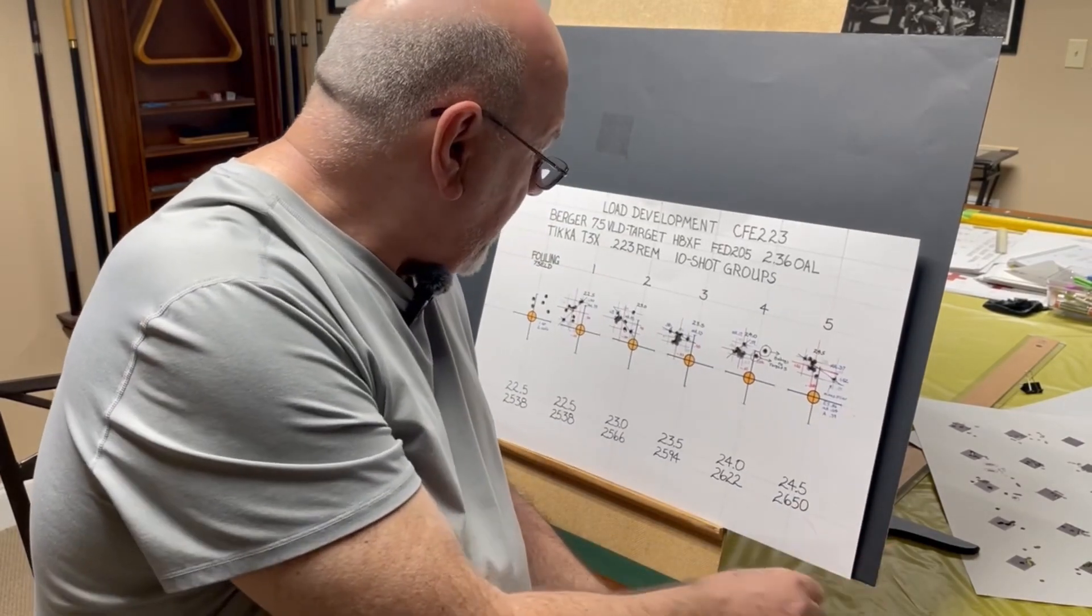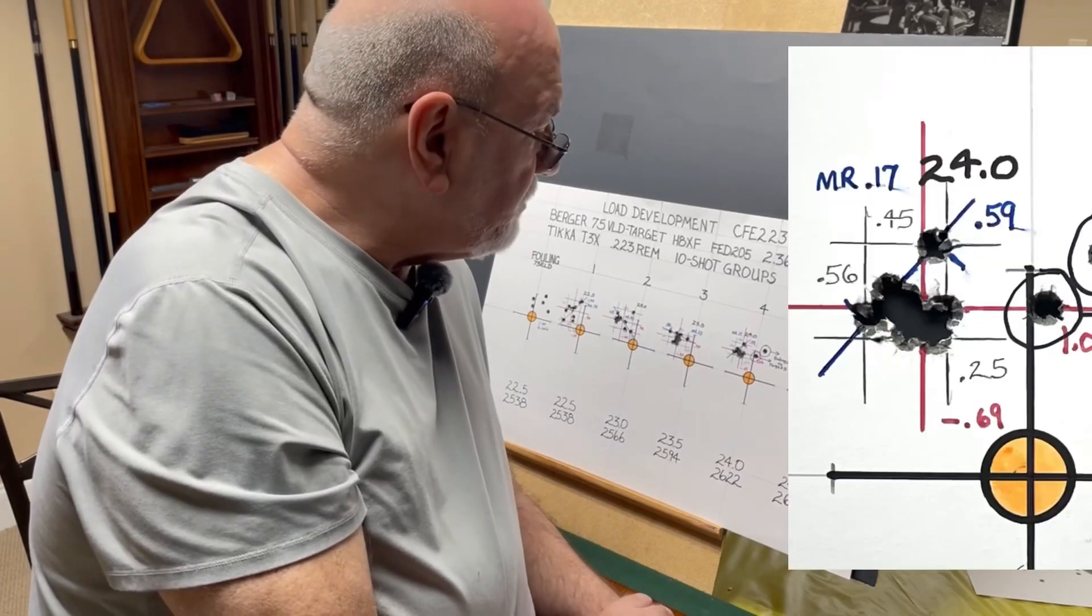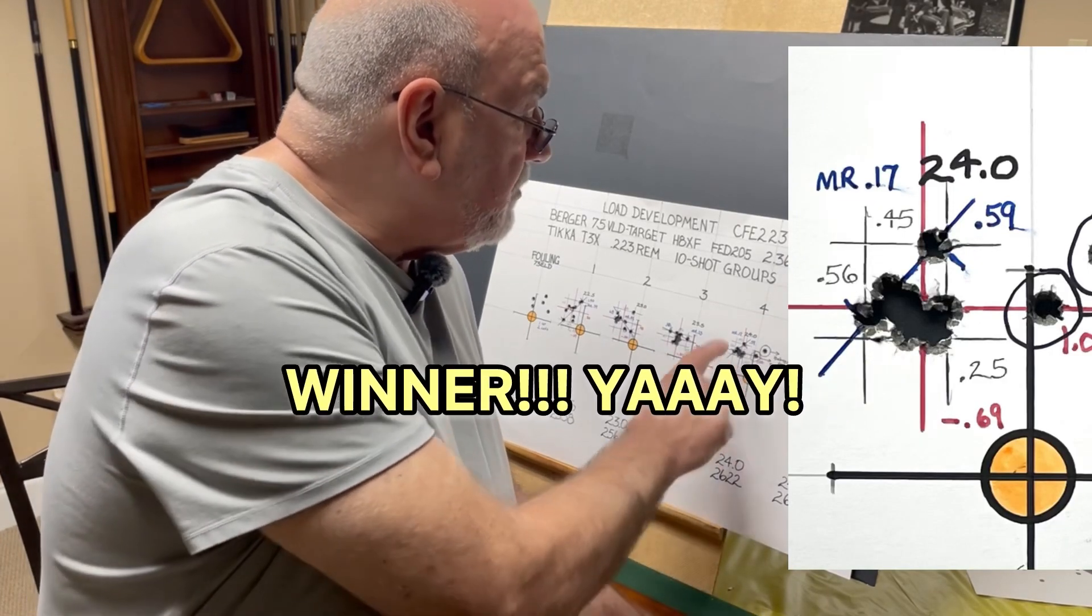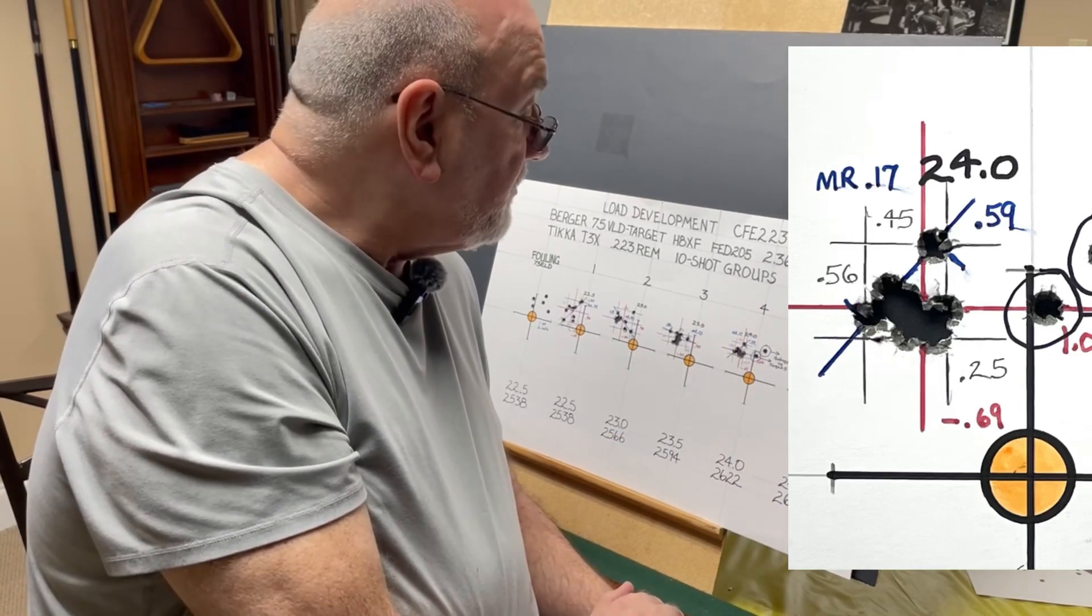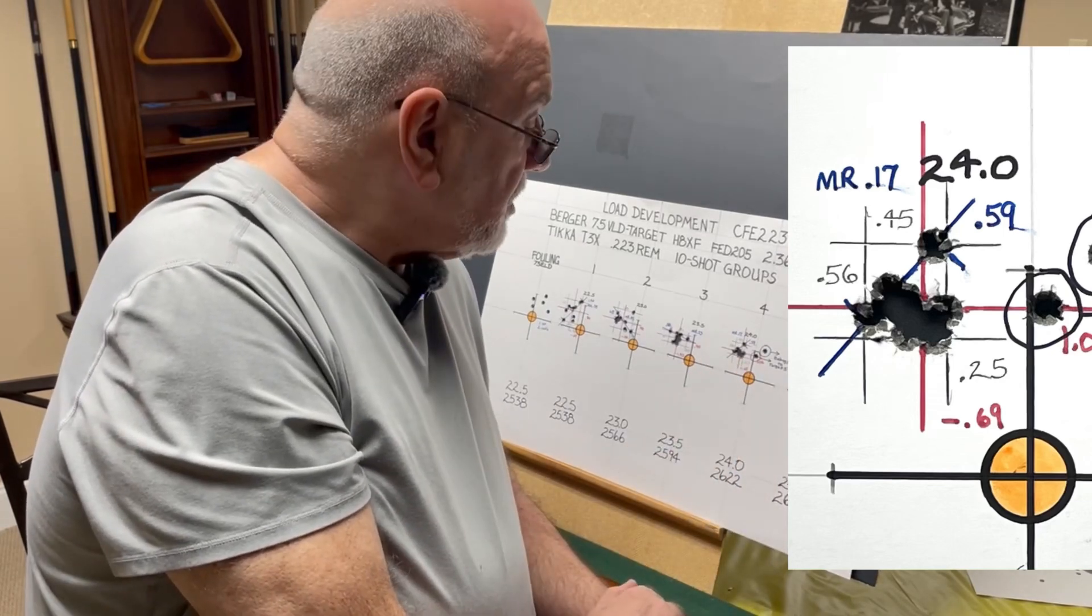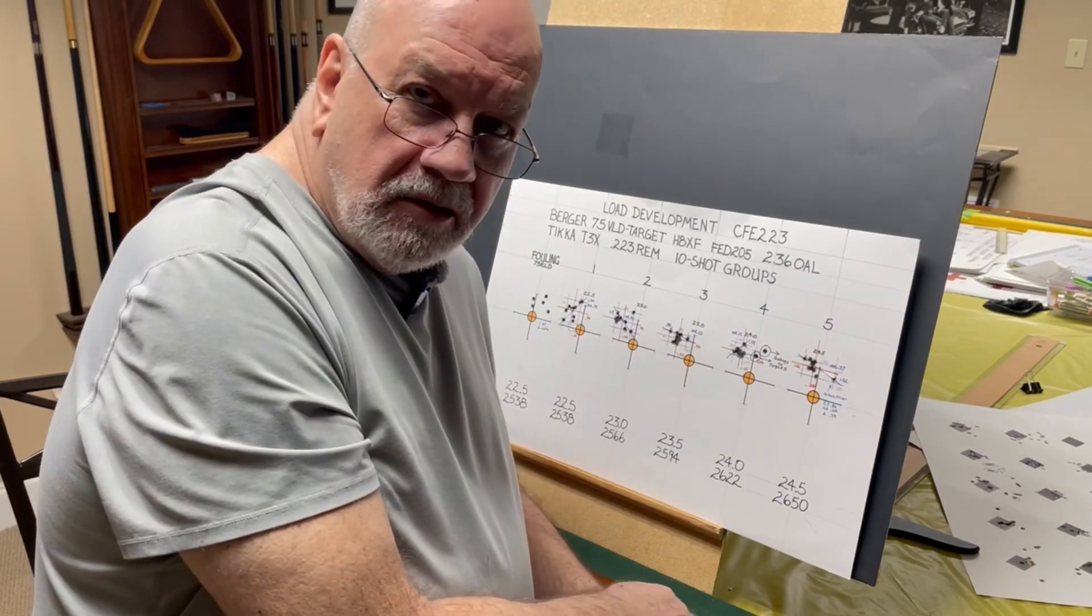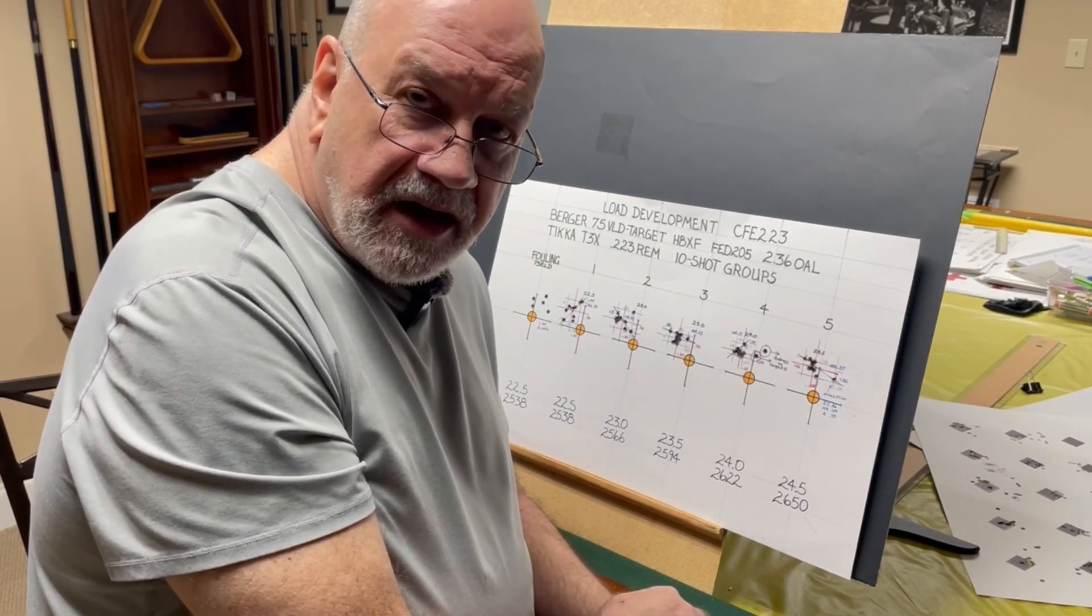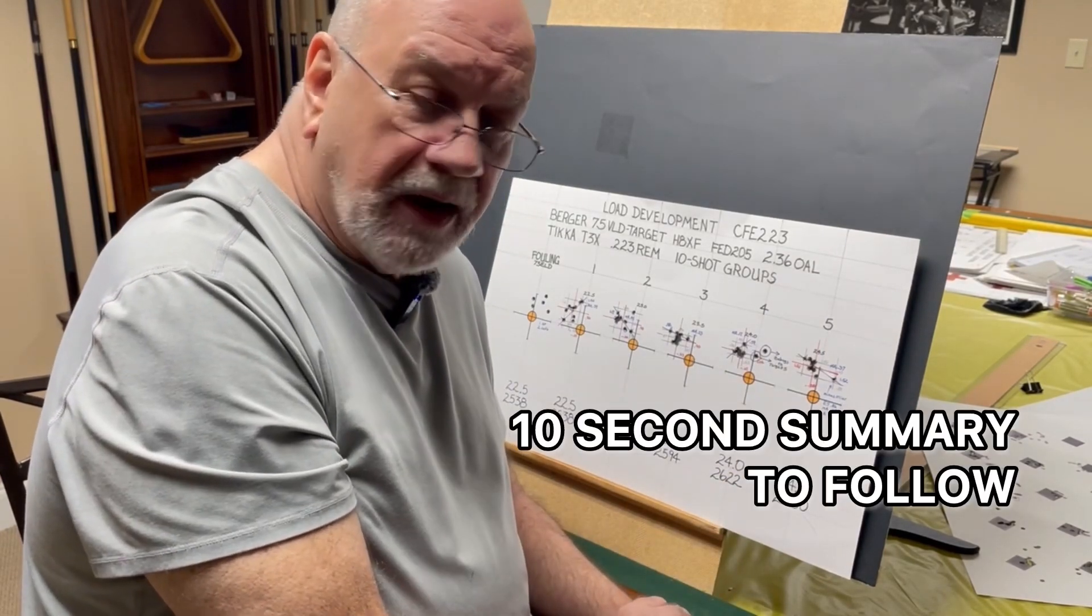Alright, so really happy here with some of these groups, especially here at 24 grains of powder. I'm going to say that's the winner for today. We've got a mean radius of 0.17 with a group size average of 0.34 inches and an area of a quarter inch, so very pleased with that. If you're going to be loading the Berger VLD target bullet and the CFE 223 powder, I suggest you look at that charge weight of 24 grains of powder.